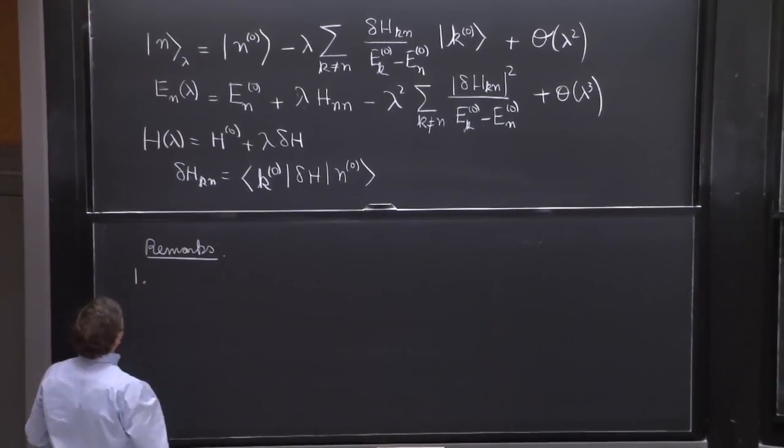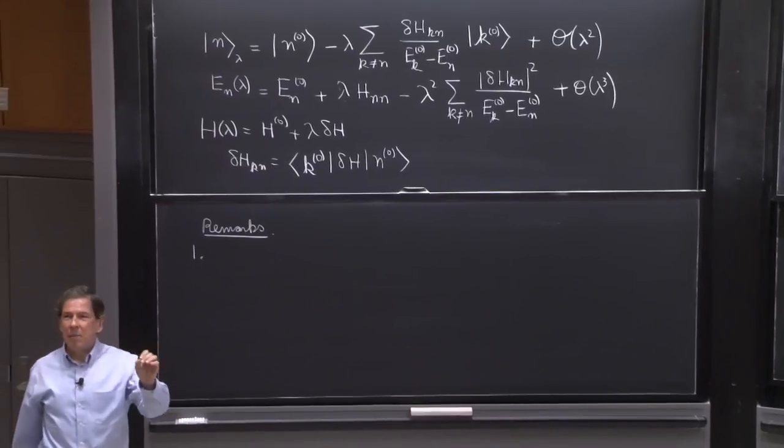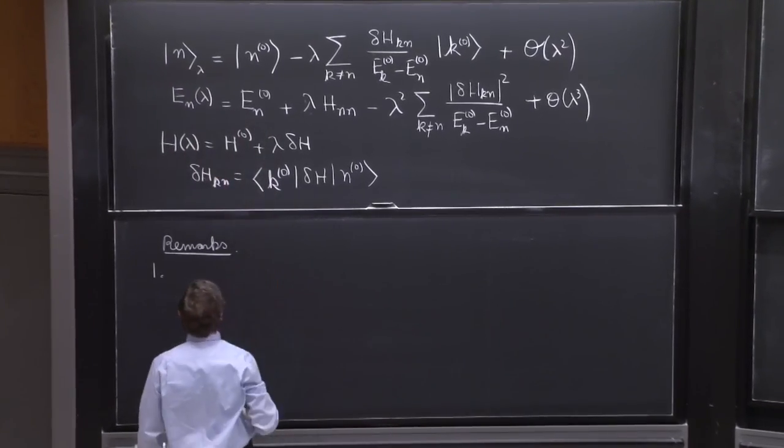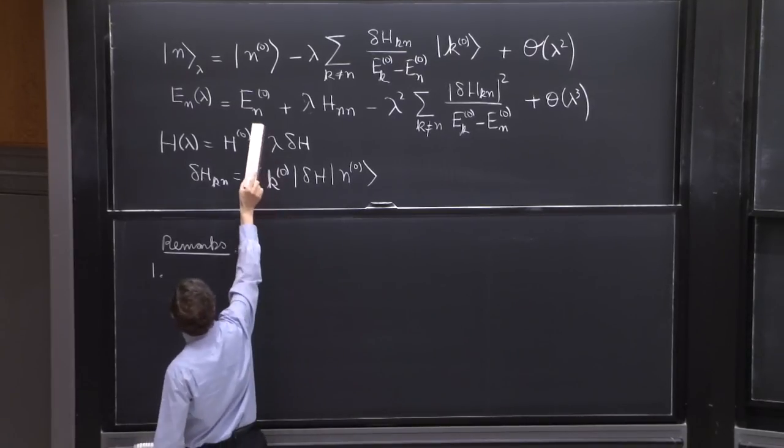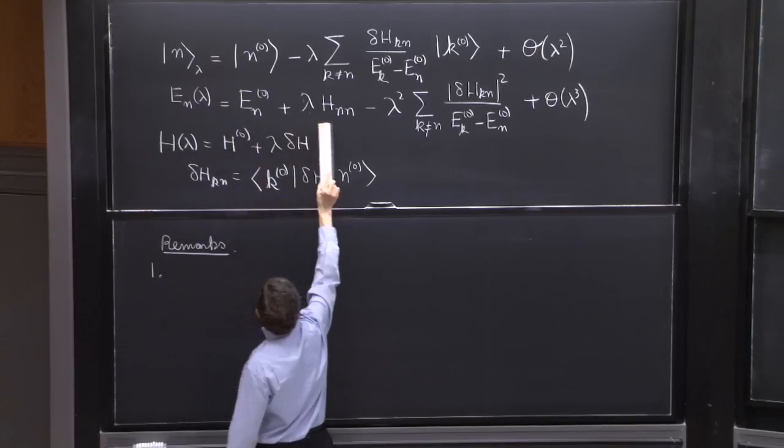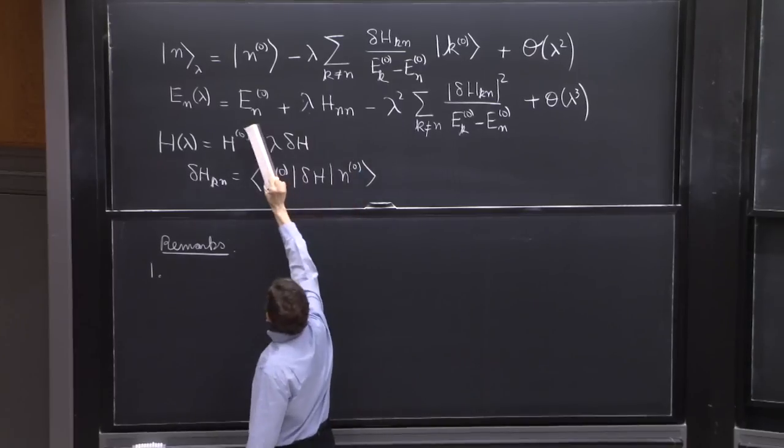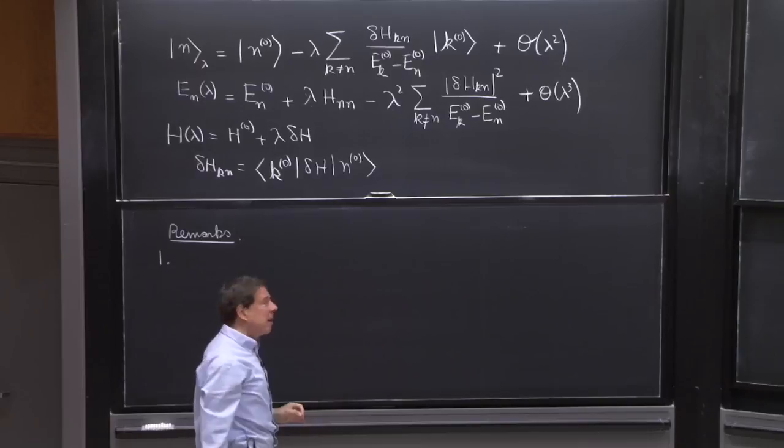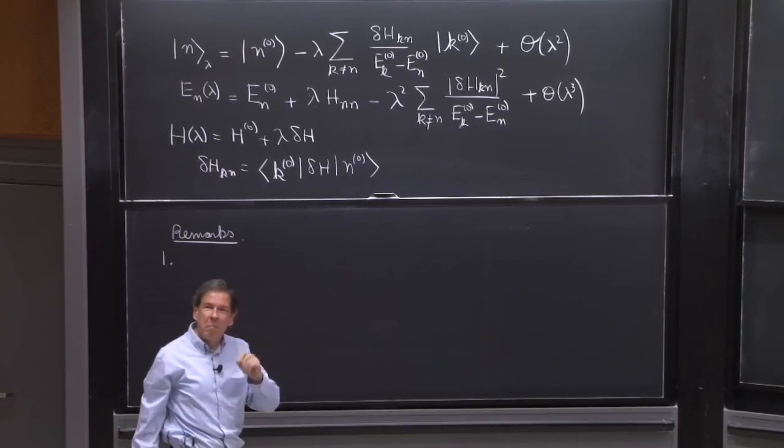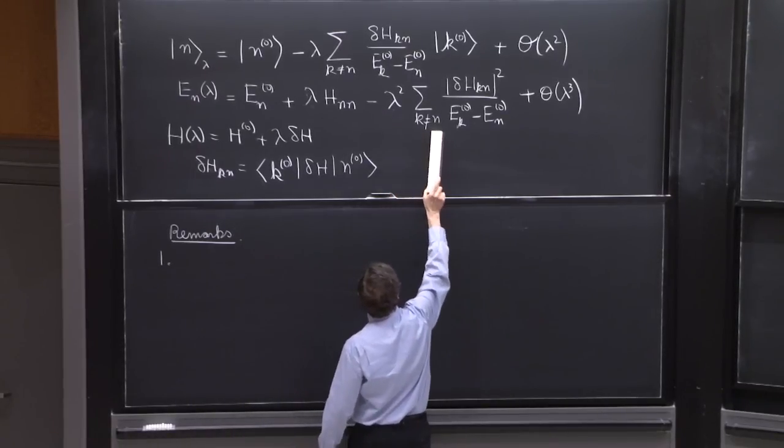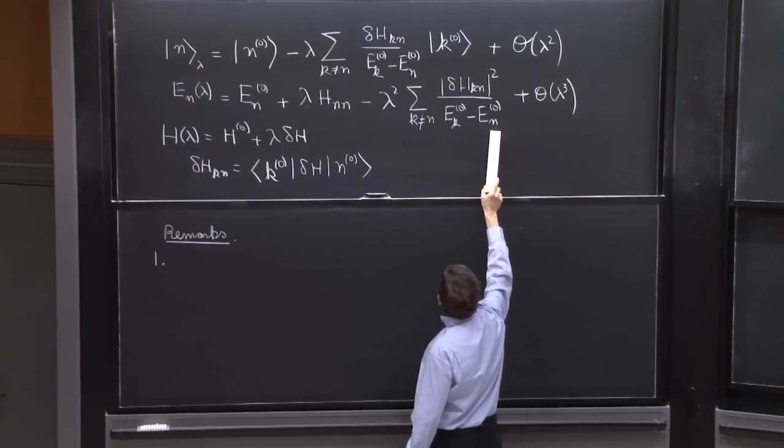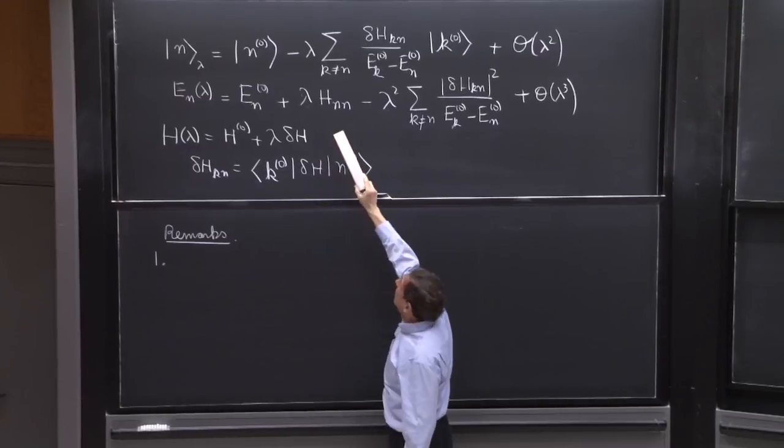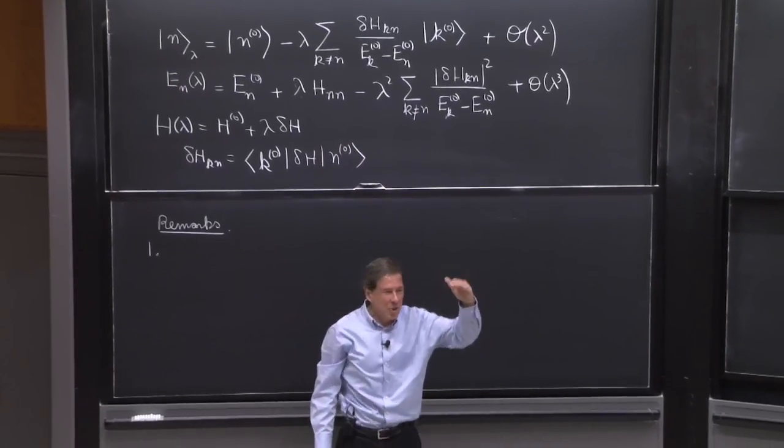First remark is that if you were to look at the ground state energy of this system, for n equals 0, if we call the ground state by the label n equals 0, these first two terms on the energy overestimate the ground state energy. They always give you more than what the true ground state energy is for any value of lambda.